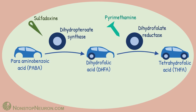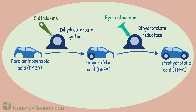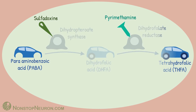Now let's give sulfadoxine along with pyrimethamine. Sulfadoxine is a sulfonamide and it inhibits dihydropteroate synthase, and pyrimethamine, as we have already seen, inhibits dihydrofolate reductase. Thus, together they produce a sequential block which provides more complete inhibition of the synthesis of tetrahydrofolic acid.